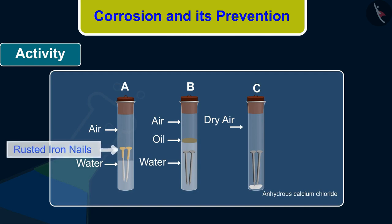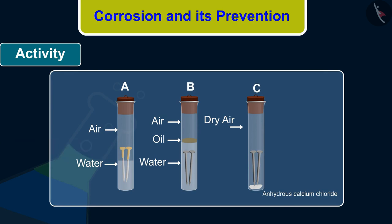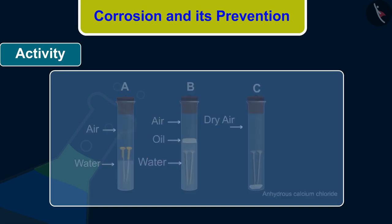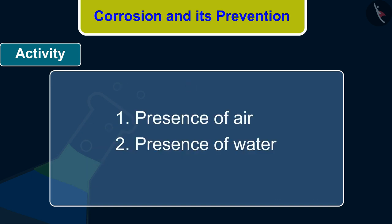You will observe that iron nails rust in test tube A but they do not rust in test tubes B and C. In test tube A, the nails are exposed to both air and water. In test tube B, the nails are exposed to only water, and the nails in test tube C are exposed to dry air only. This tells us that the conditions required for iron to rust are: (1) presence of air, and (2) presence of water.